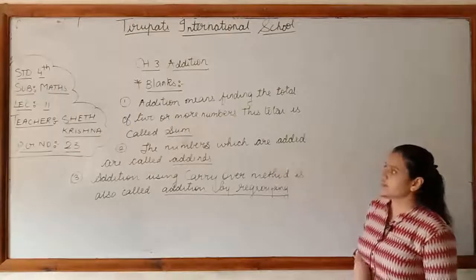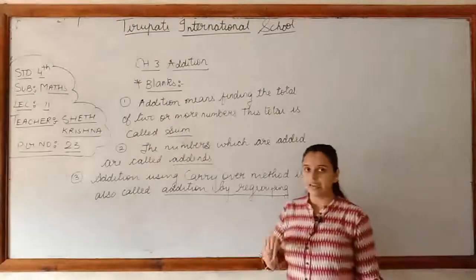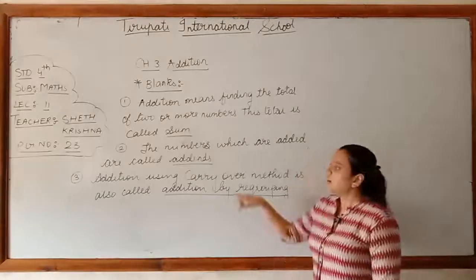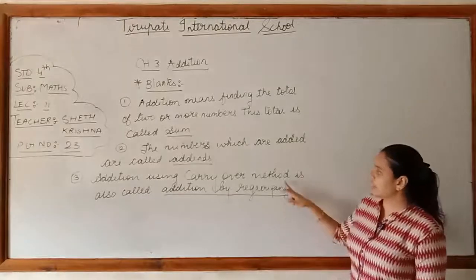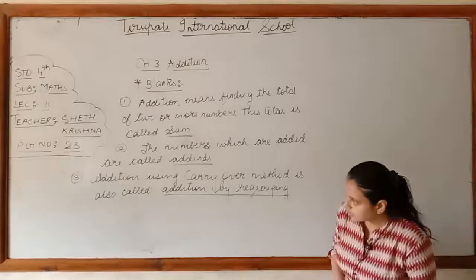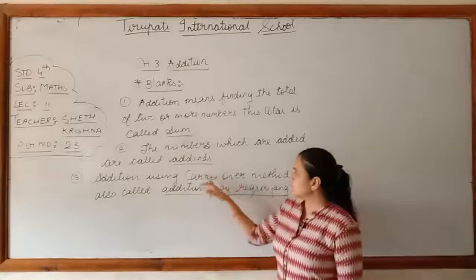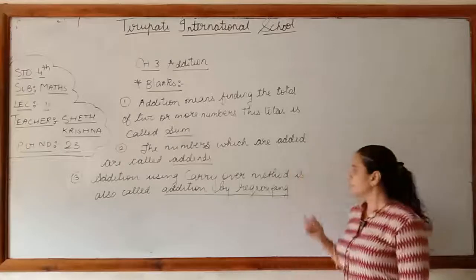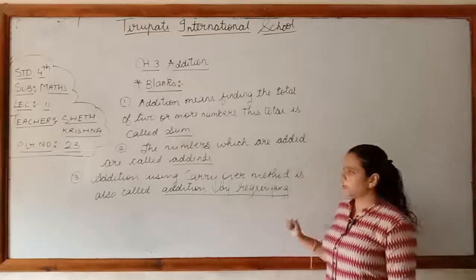The second point: the numbers which are added are called addends. Addition using the carry-over method is also called addition by regrouping. When we carry in addition, that method is called addition by regrouping.